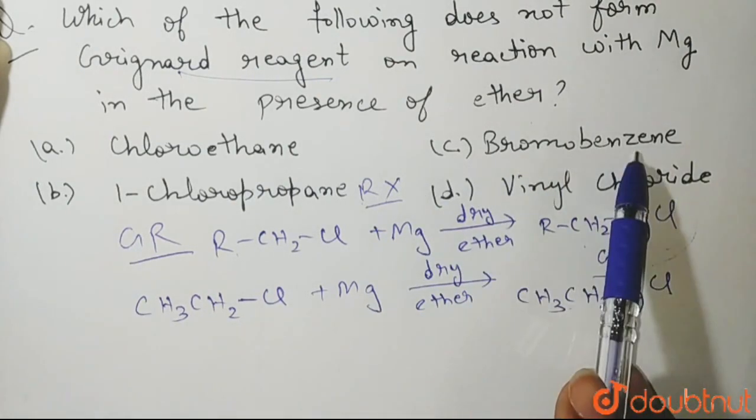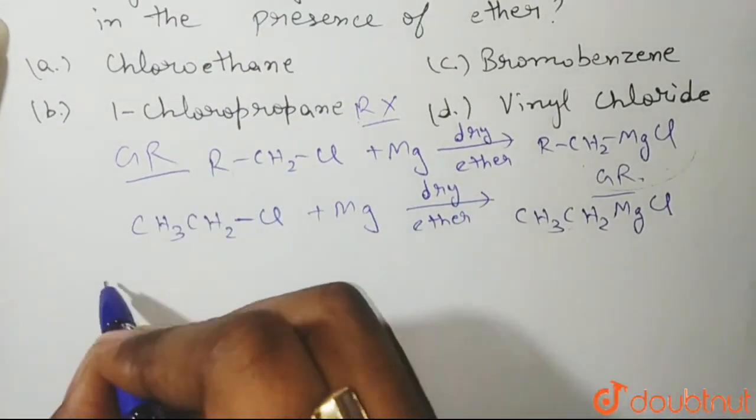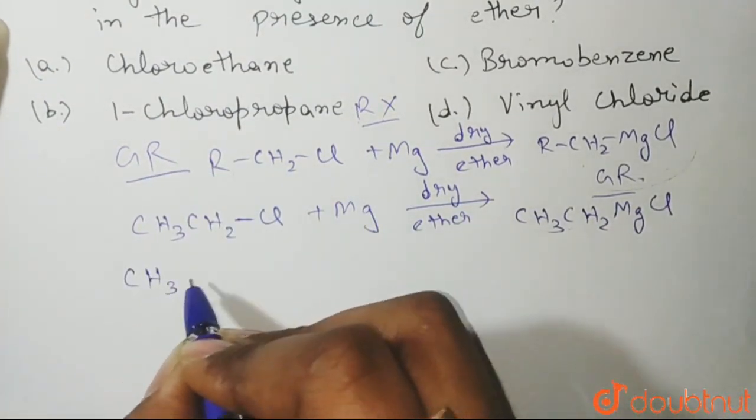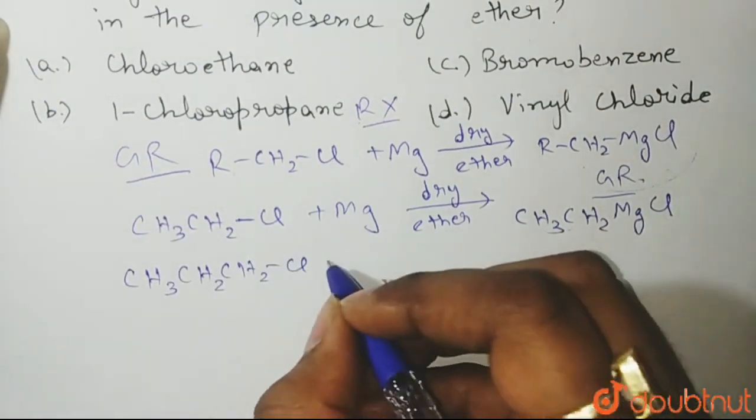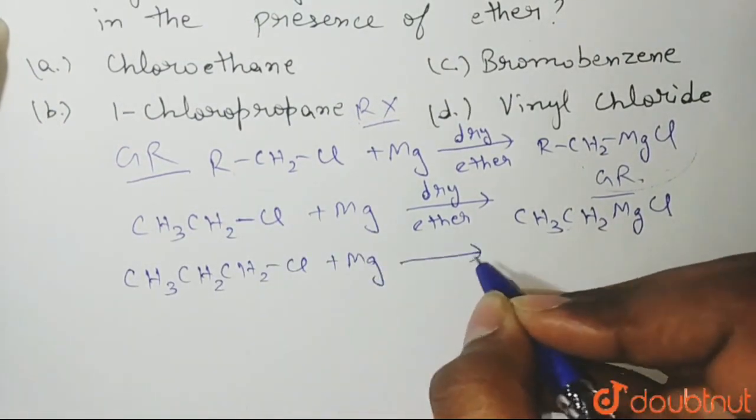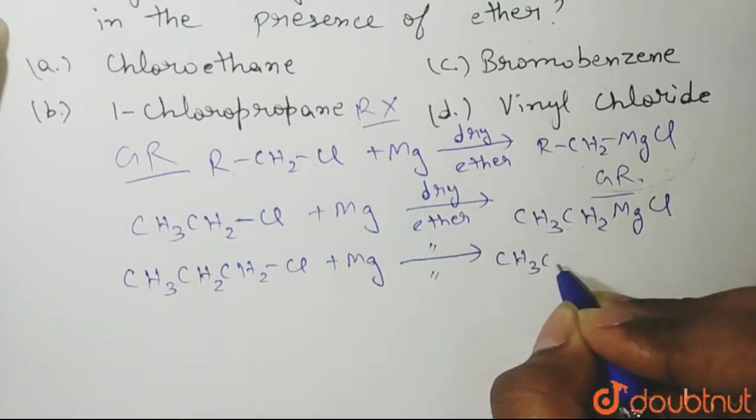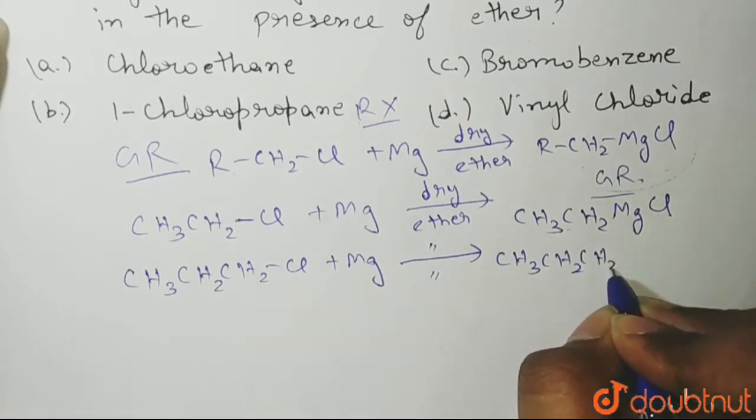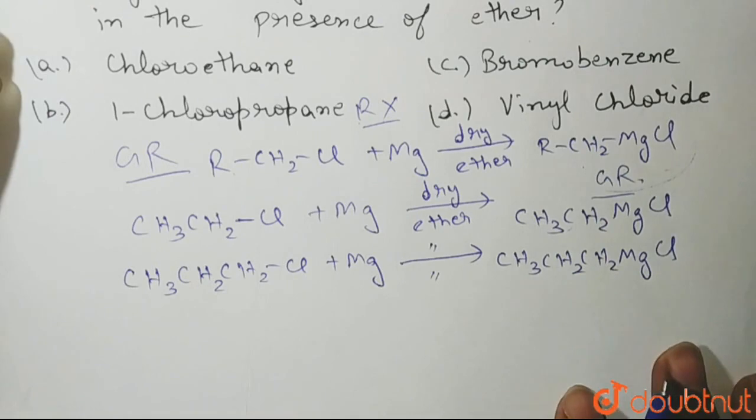C, that is bromobenzene, that will also form. Let's see 1-chloropropane. Propane is CH3CH2CH2, and it is 1-chloro, so it is 1-chloropropane. You react it with magnesium in presence of dry ether. What you will get? You will get CH3CH2CH2MgCl. This is your Grignard reagent.